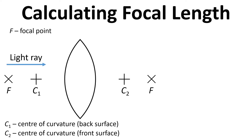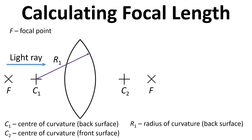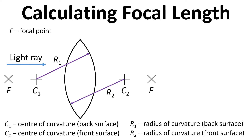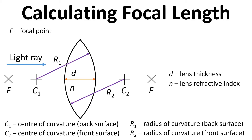In terms of calculating focal length we can use a very similar diagram and we're going to define some extra terms. R subscript one is the radius of curvature from centre one to the back surface. R subscript two is the radius of curvature from centre two to the front surface. D is the lens thickness at its thickest part. N is the refractive index of the lens, and the distance from the optical centre to the focal point is the focal length.